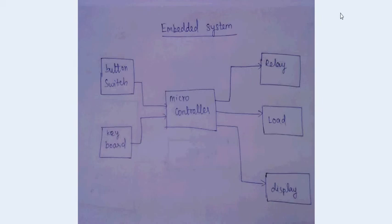So in embedded system, this is a simple block diagram of embedded system. In embedded system, input might be button switch and keyboard, etc.